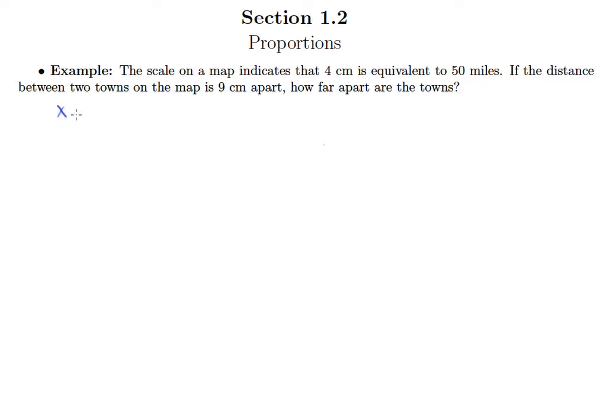We know that x miles corresponds to this 9 centimeters on the map, right? So those go together. And then also we have the 50 miles going together with the 4 centimeters on the map. So I think the obvious choice here is comparing x miles to 9 centimeters is equivalent to comparing 50 miles to 4 centimeters. The actual mileage compared to its corresponding distance on the map.